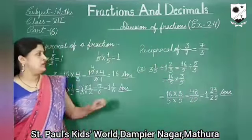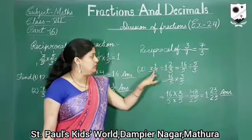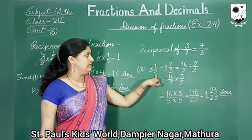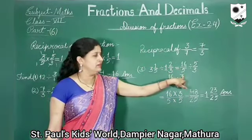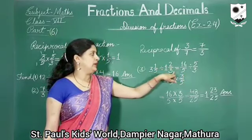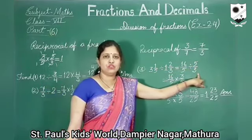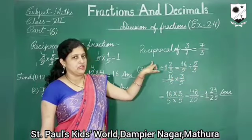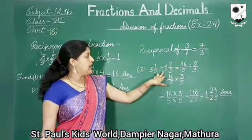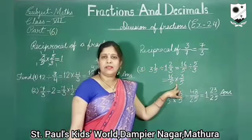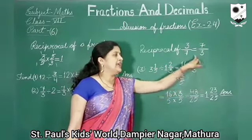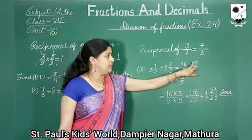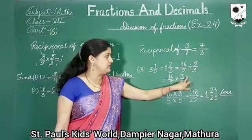Now divide a fraction by a fraction number. It is a mixed fraction, so first we change it to improper fraction. 3 whole 1 upon 5 gives 16 upon 5 — because 3 fives are 15 plus 1 equals 16 upon 5. Divided by 1 whole 2 upon 3, which gives 5 upon 3. We change this division into multiplication and write the reciprocal of the second number. So 16 upon 5 multiplied by 3 upon 5 — the reciprocal of 5 upon 3 is 3 upon 5.